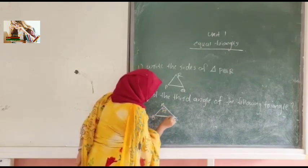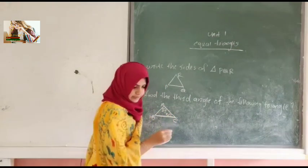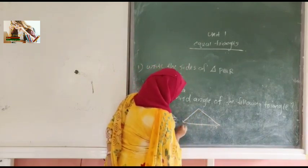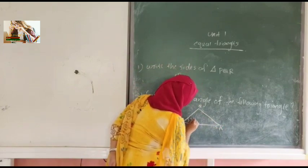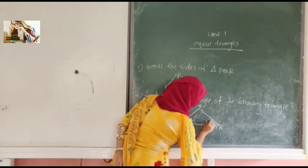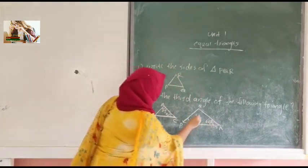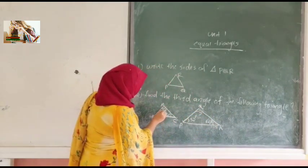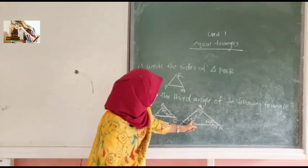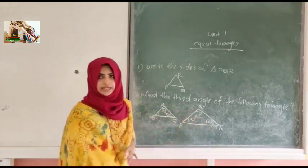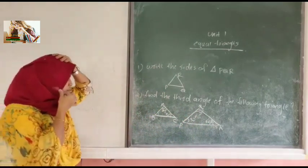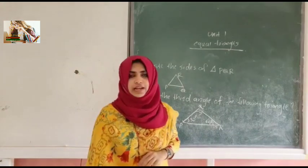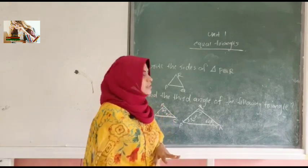For triangle ABC, angle A is 73 degrees, angle C is 50 degrees. For triangle PQR, the given angles are 32 degrees and 64 degrees. We want to find angle Q and angle B — the third angle in each case. So these are the homework for you. It's easy homework. Today's class was just a basic idea of a triangle. I think you can understand. Thank you.